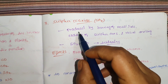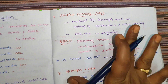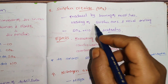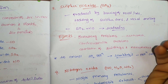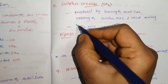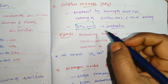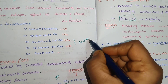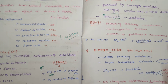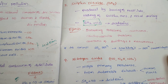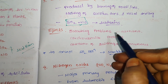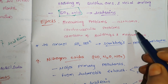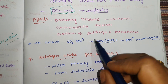Then sulfur dioxide: it is produced by the burning of fossil fuels, which is common among almost all air pollutants. Also from melting of sulfur ores and metal melting. Sulfur dioxide leads to acid rain — this is also an MCQ topic. Nitrogen oxides and sulfur dioxide together form acid rain. Sulfur dioxide causes breathing problems like asthma, cardiovascular problems, and corrosion of buildings and monuments.